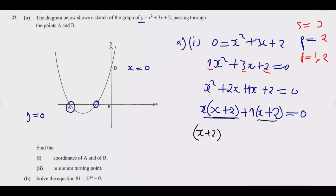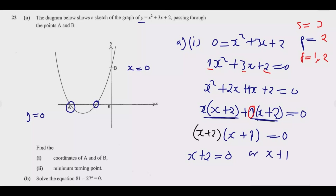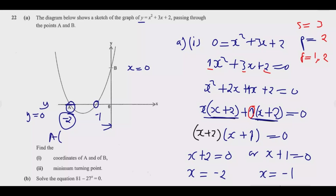Since (x + 2) is common to both terms, we factor it out to get (x + 2)(x + 1) = 0. This means either x + 2 = 0 or x + 1 = 0, giving x = -2 or x = -1. Since at point A the value of y is zero and A is on the x-axis, the coordinate of A is (-2, 0).